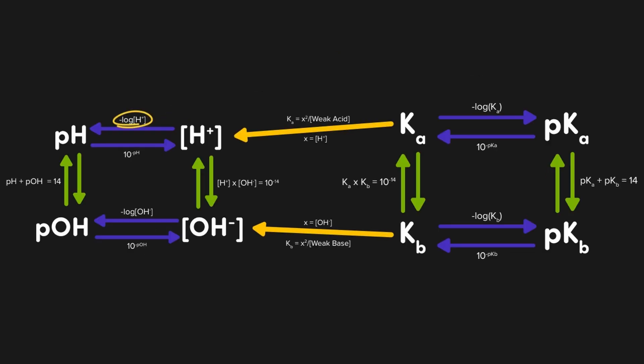It looks like a lot to memorize, but remember all the conversions essentially have the same math. So if you know the conversion from hydroxide to pH, then you also know all of the other conversions into the p-scale. And the same is true for the rest of the map.